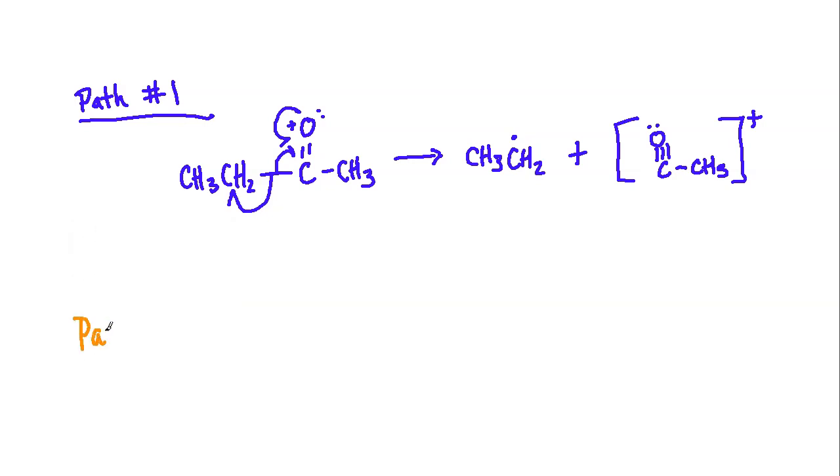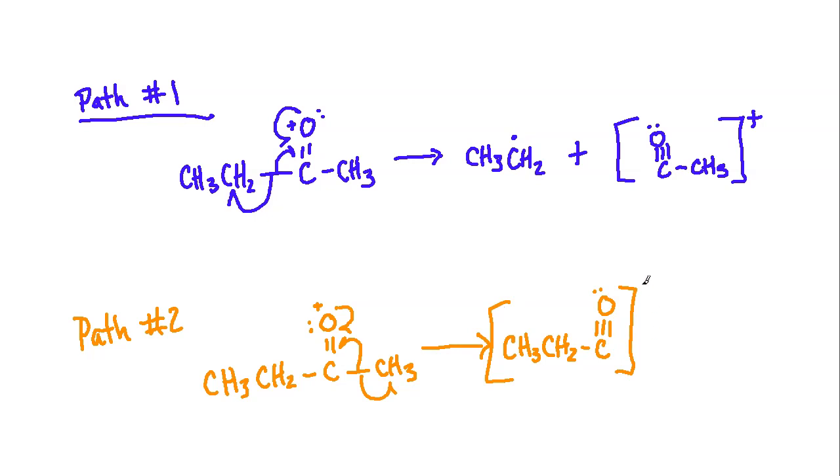Path number two is going to be very similar, but there will be a different alpha site that we're going to cleave here. So again, keeping the same initial setup with our oxygen. And this time, we are going to have the radical form this way with the methyl. So what we would end up with is the larger chunk here will now be the charged carbonyl. We can put all that into brackets and put the charge there, plus you would just end up with the CH3 radical.